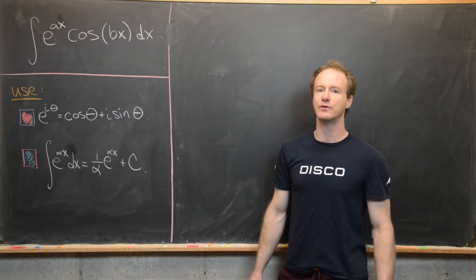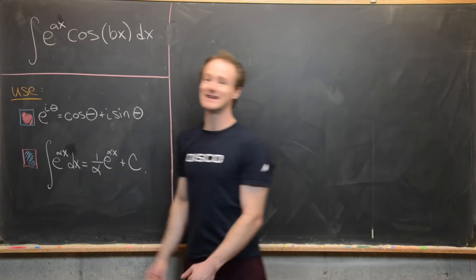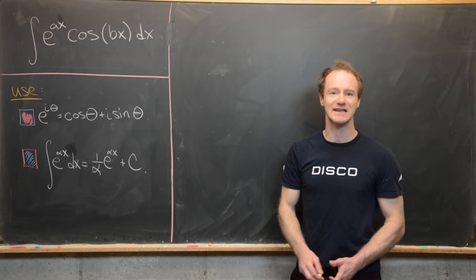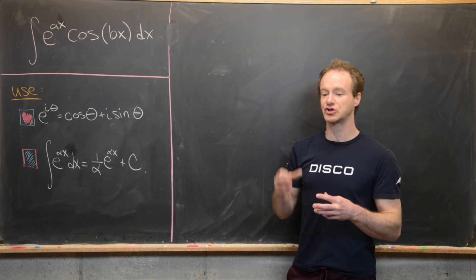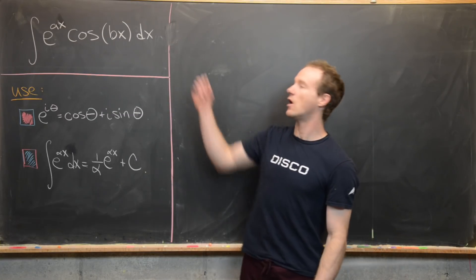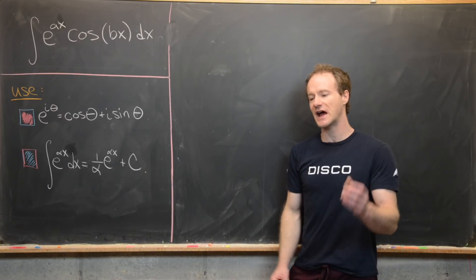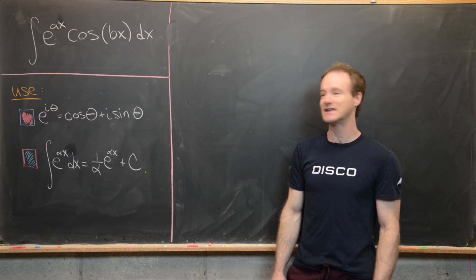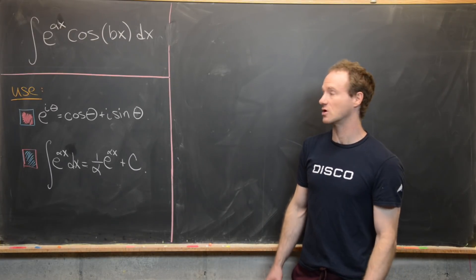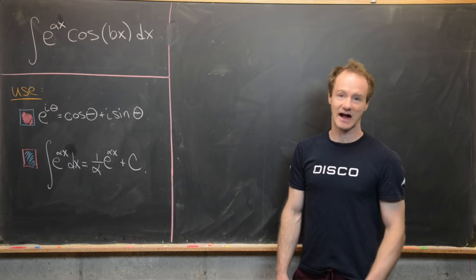Generally you would use integration by parts on this. You would maybe let u equal e^(ax) and then dv would be cos(bx)dx. You would have to loop through integration by parts twice until you created an equation involving your goal integral. It's not really that difficult, it's a good exercise in integration by parts, but it takes a long time. It would maybe take this whole chalkboard or maybe a chalkboard and a half. But what we're going to do is a lot quicker, and it's going to use two facts.